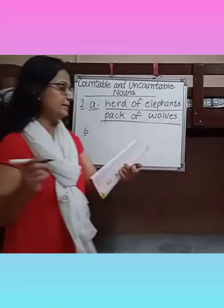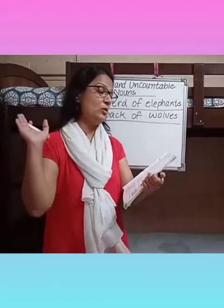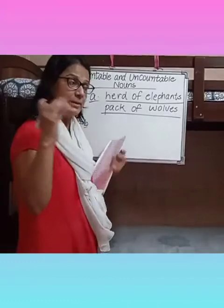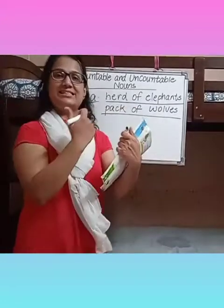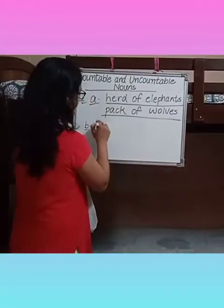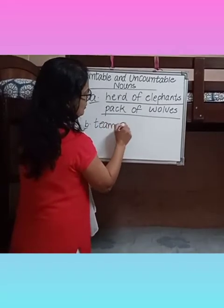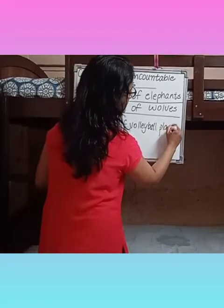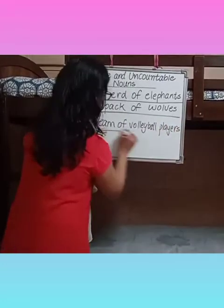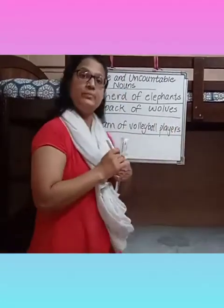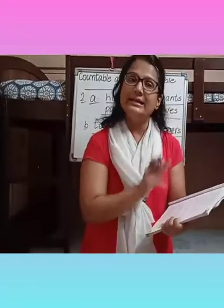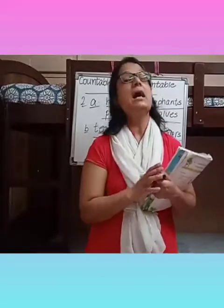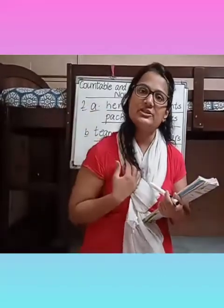Part B: 'The team of volleyball players tried hard to win the game.' There is a team — the group of players is called a team of players. So we have to underline 'team of volleyball players'. In the same manner, you are going to underline the remaining collective nouns in the remaining sentences. Answers will be provided in the assignment section.